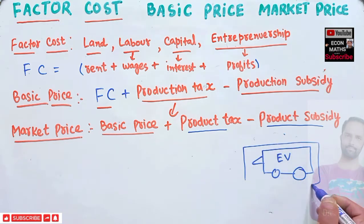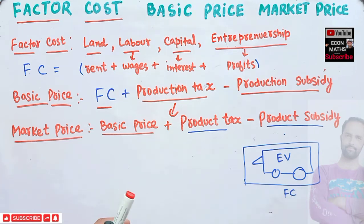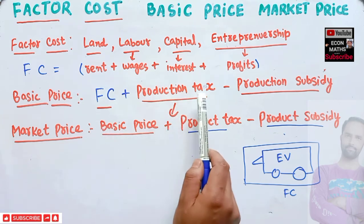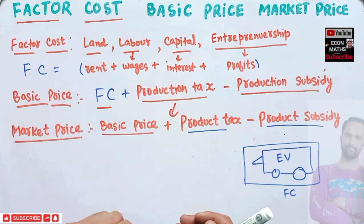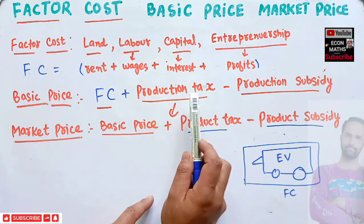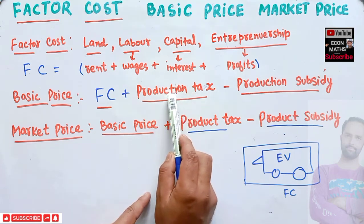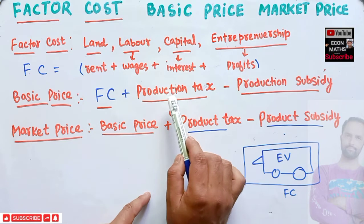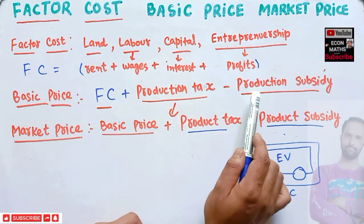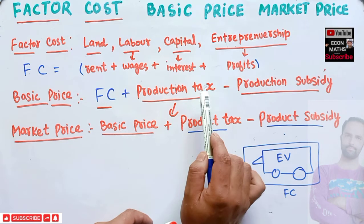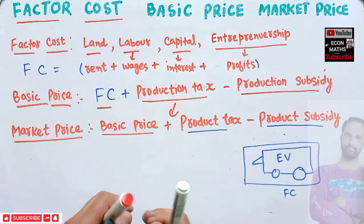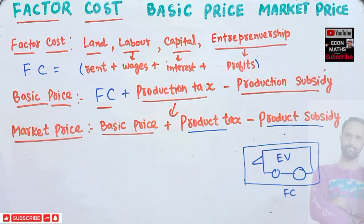Now, what is basic price? Basic price is equal to factor cost plus production tax minus production subsidy. Production tax or subsidy is paid or received in relation to production, and it is independent of the actual volume of production.